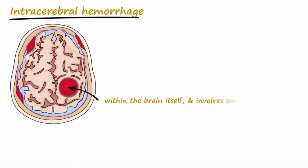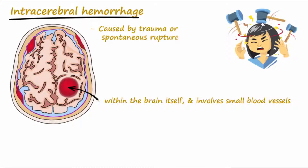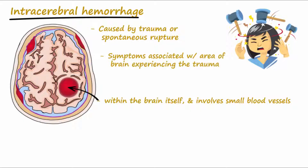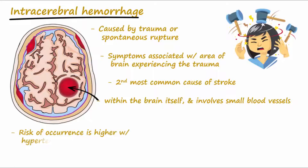Intracerebral hemorrhages occur within the brain itself and usually involve very small blood vessels. This type of bleed may be caused by trauma or spontaneous rupture. Symptoms are associated with the functional area of the brain that is experiencing the trauma. Intracerebral bleeds are the second most common cause of stroke, and the risk of experiencing this type of bleed is increased by high blood pressure and diabetes.